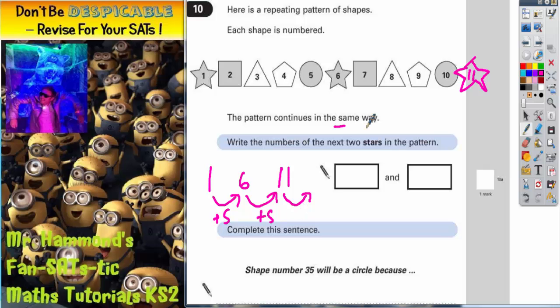So add on 5 to 11, then you would get 16. So the next two stars in the pattern are 11 and 16, because we're adding 5 on each time to get the next star.